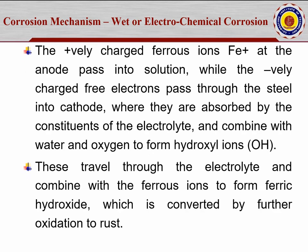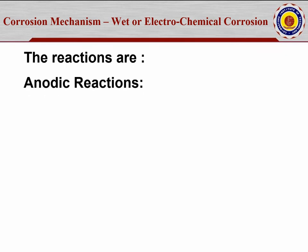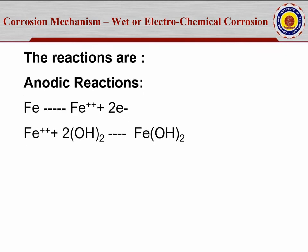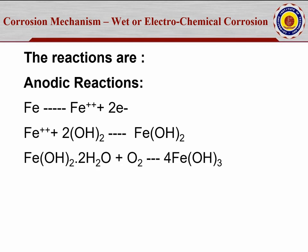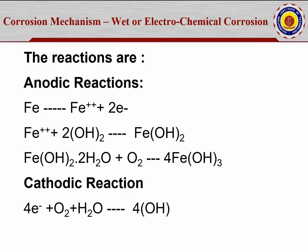The corrosion process forms hydroxyl ions as well as ferric hydroxide. The reaction is: FeOH₂ (ferrous hydroxide) reacts with water and oxygen to form 4FeOH₂. This cathodic reaction is the process to form hydroxyl ions — this is the corrosion mechanism.